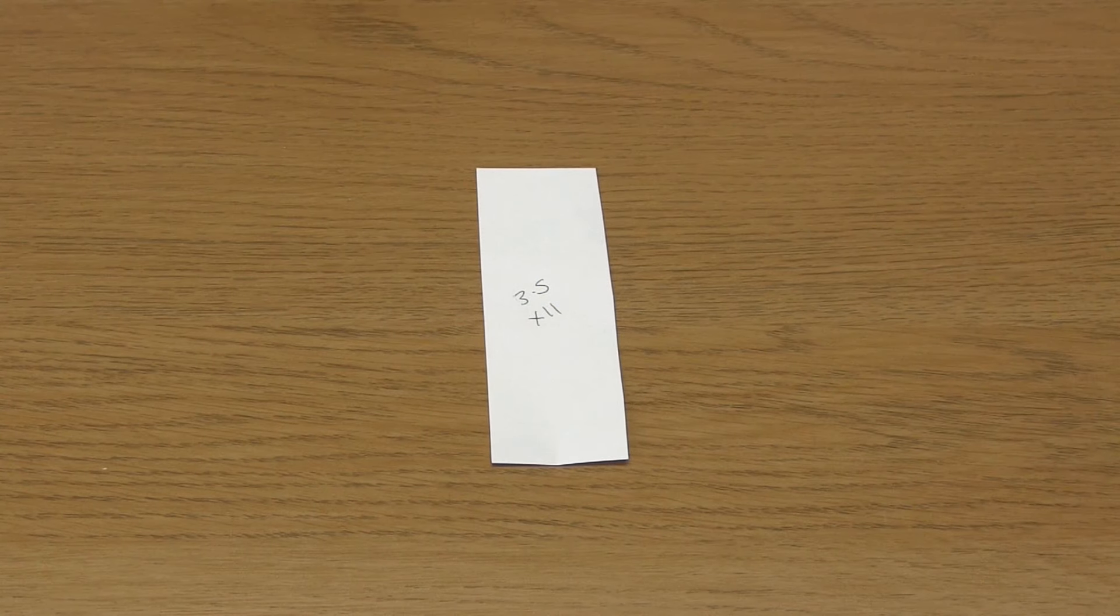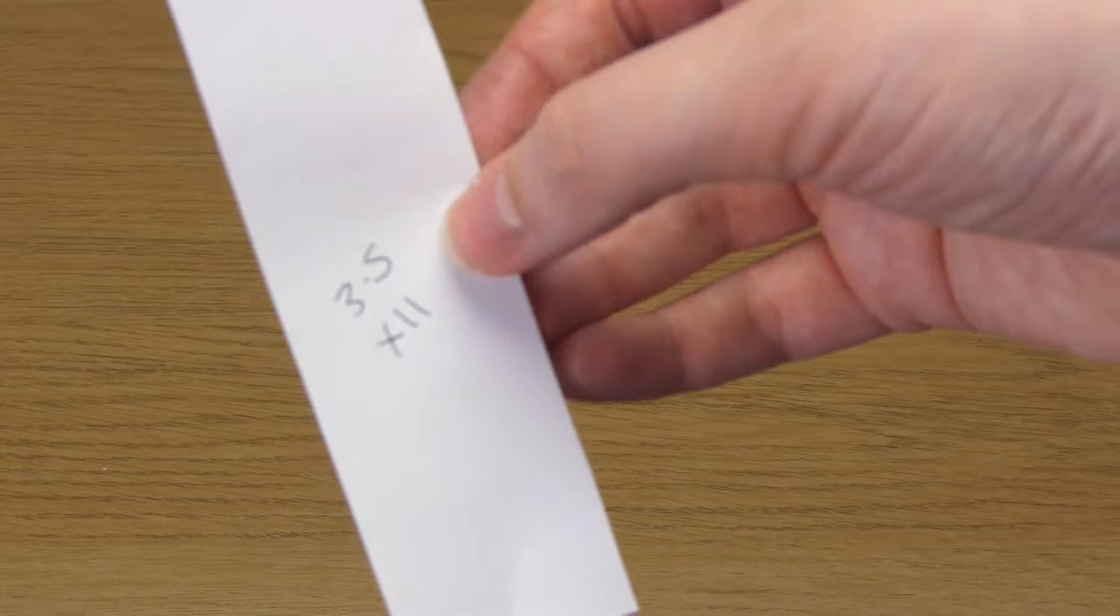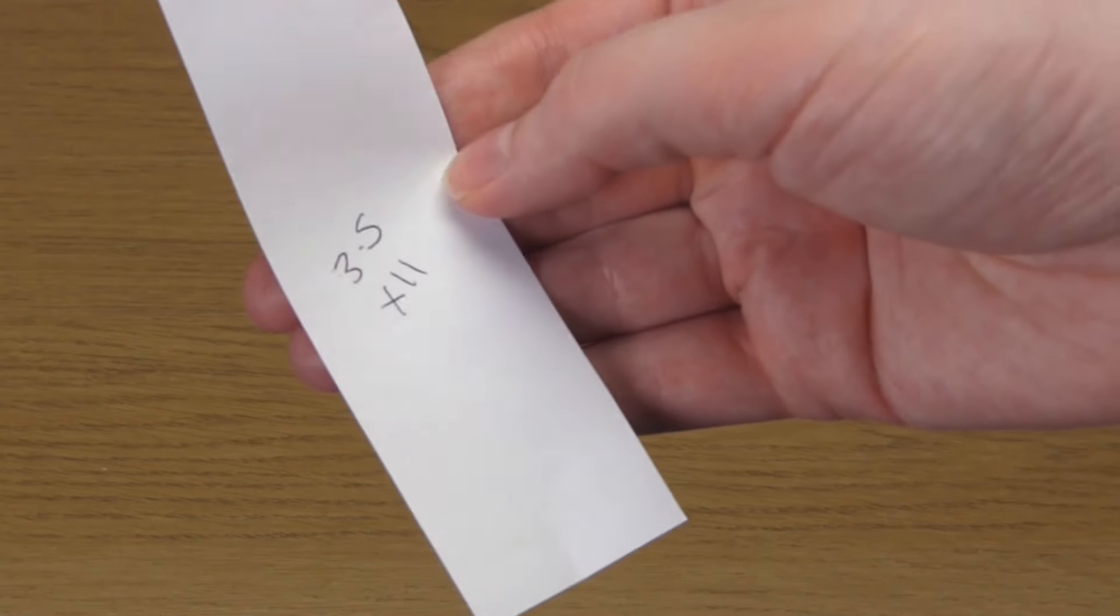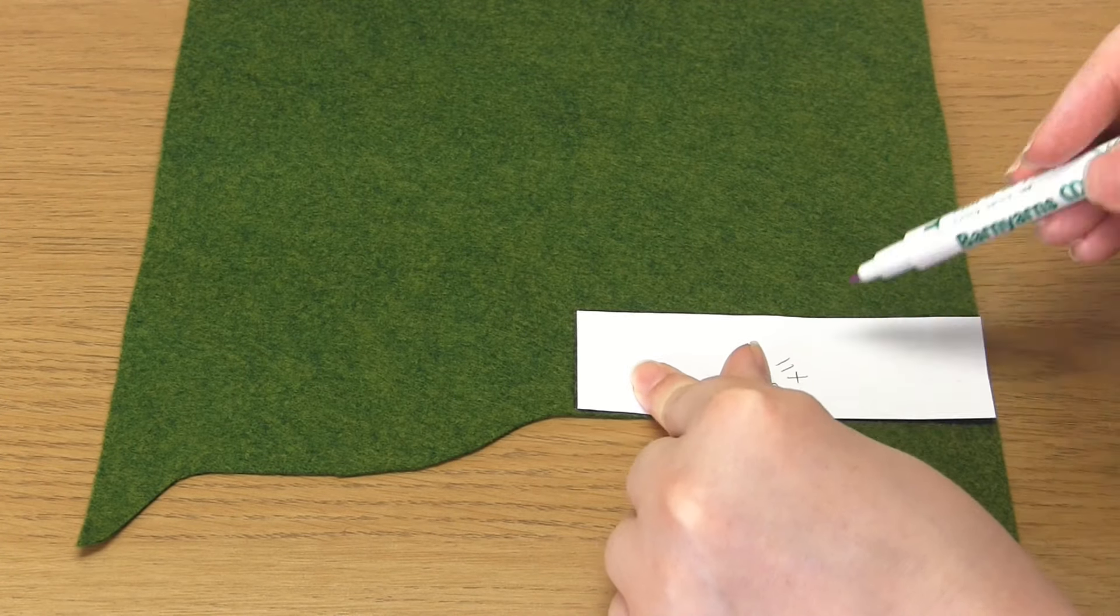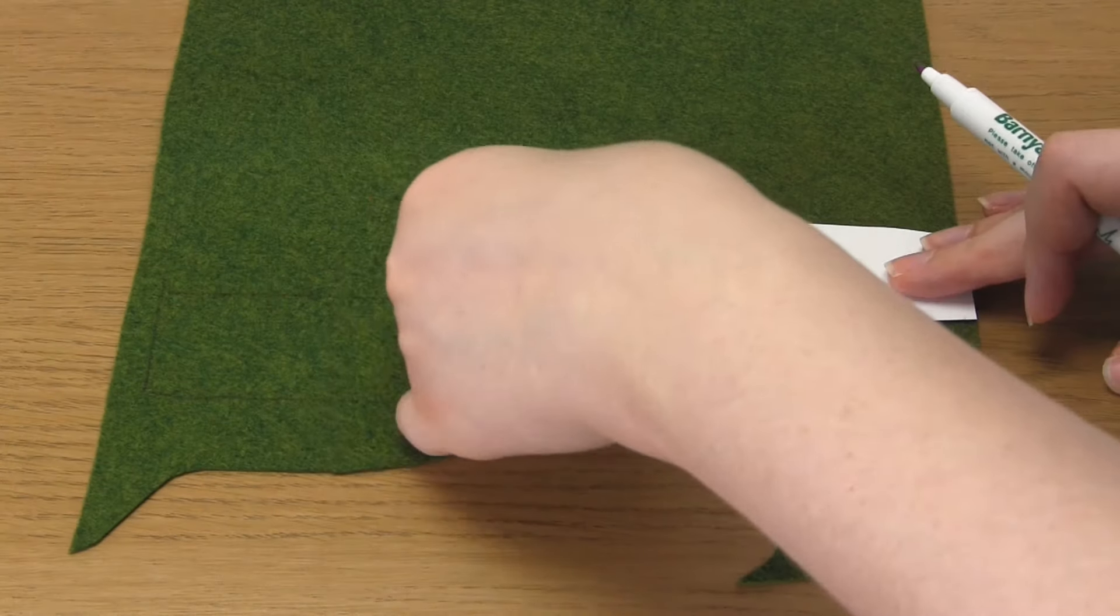The third plant design is kind of like a spiky air plant, and it's a good one to use at the edge of a display. To make this, you'll first need a paper rectangle that measures 11 by 3.5 cm. Draw around this template six times onto felt, and then cut these shapes out.